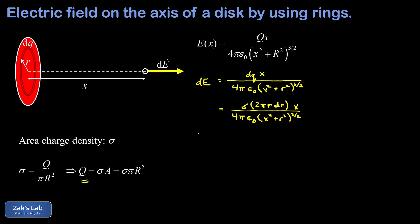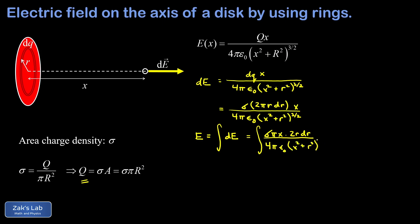Now that we've expressed the field increment in terms of little r, we use integration to add up all the contributions. The total electric field is the integral of dE. We plug in our expression, rearranging constants to write it as sigma·π·x times 2r dr, keeping that factor of two for a reason we'll see shortly, over 4πε₀ times (x² + r²)^(3/2). This is an r integral, with the radii of our rings going from zero to the outer edge R.